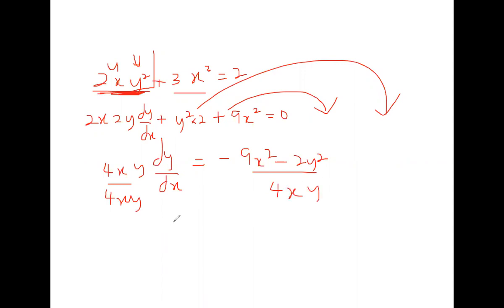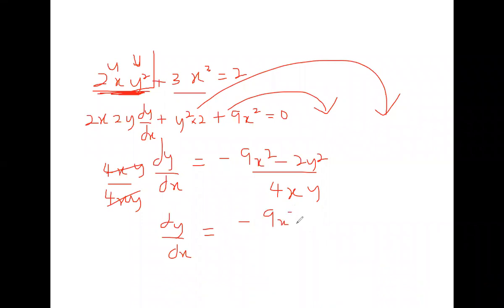Making dy/dx the subject: 4xy·(dy/dx) = −9x² − 2y². Divide both sides by 4xy. The final answer is dy/dx = (−9x² − 2y²)/(4xy).